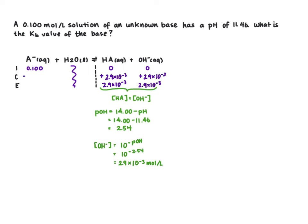The change for A minus will be 2.9 times 10 to the negative 3, but negative. So we can subtract that from our initial concentration of our base to get the equilibrium concentration of 0.097.